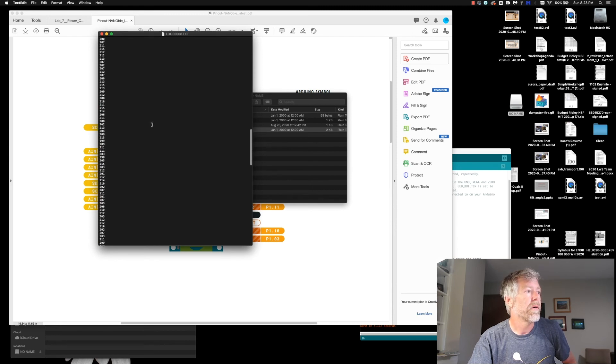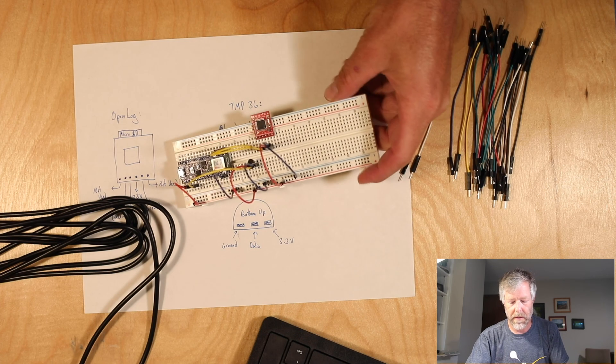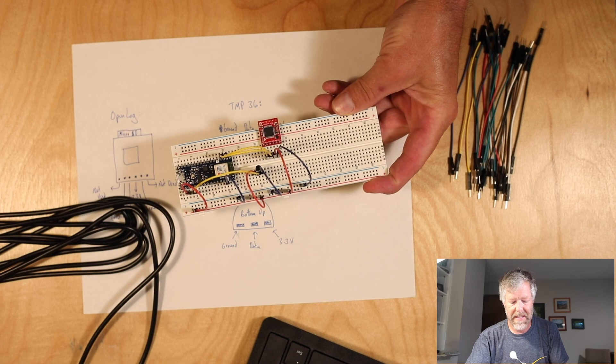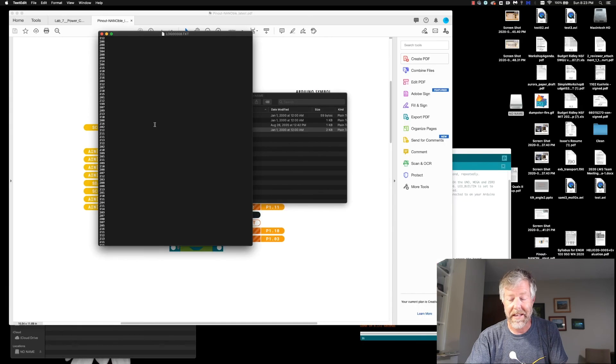Now we can, oh my gosh, there's so many values. Now we can read those values into MATLAB or Python or whatever program you want. Excel, you could actually bring those into Excel very easily and plot them out. You can do some averaging because the data are all over the place. There you go. You have temperature data from your Arduino now into your OpenLog to the SD card. Take out the SD card, put it in your computer, and you have now the temperature data on your computer.